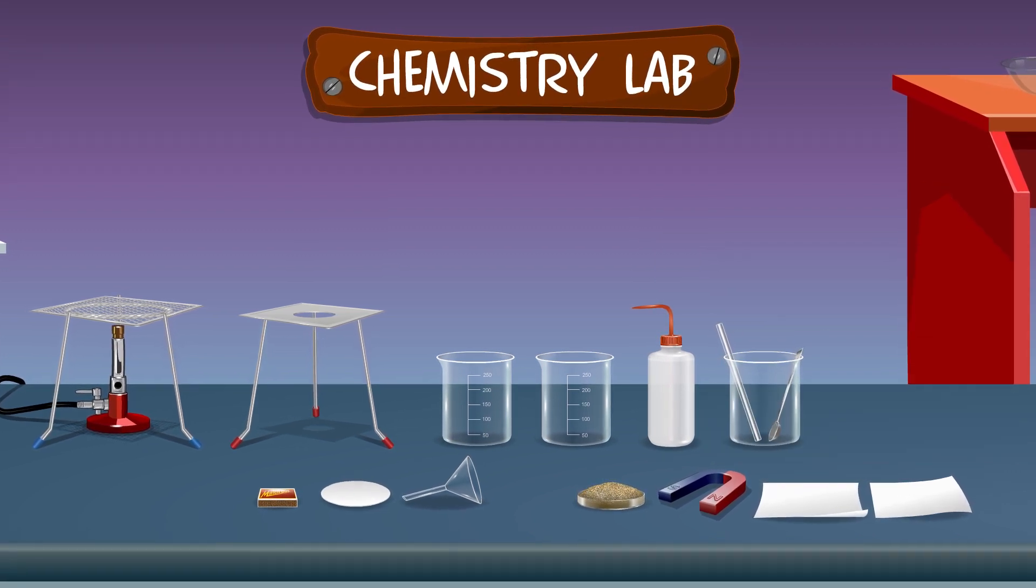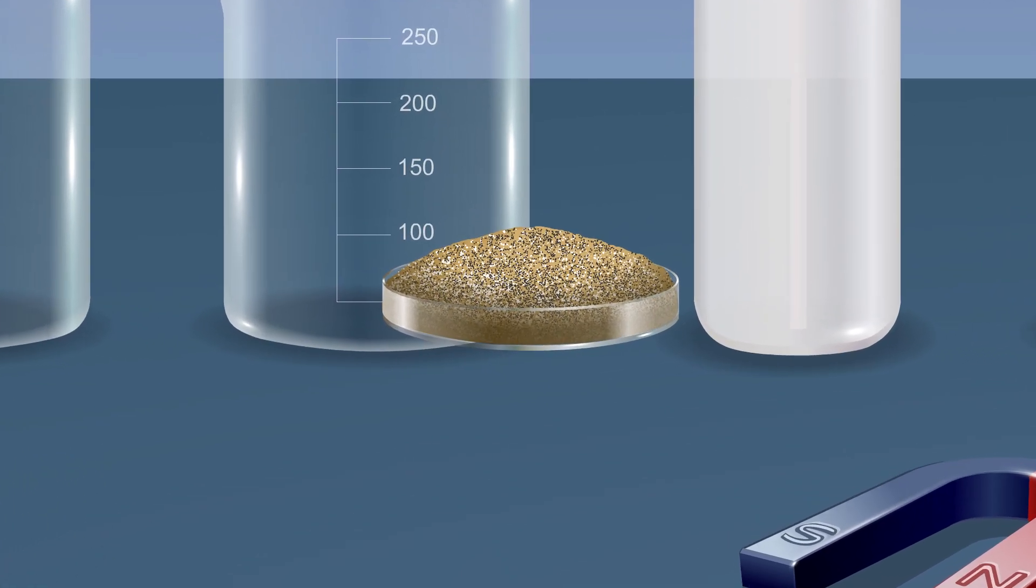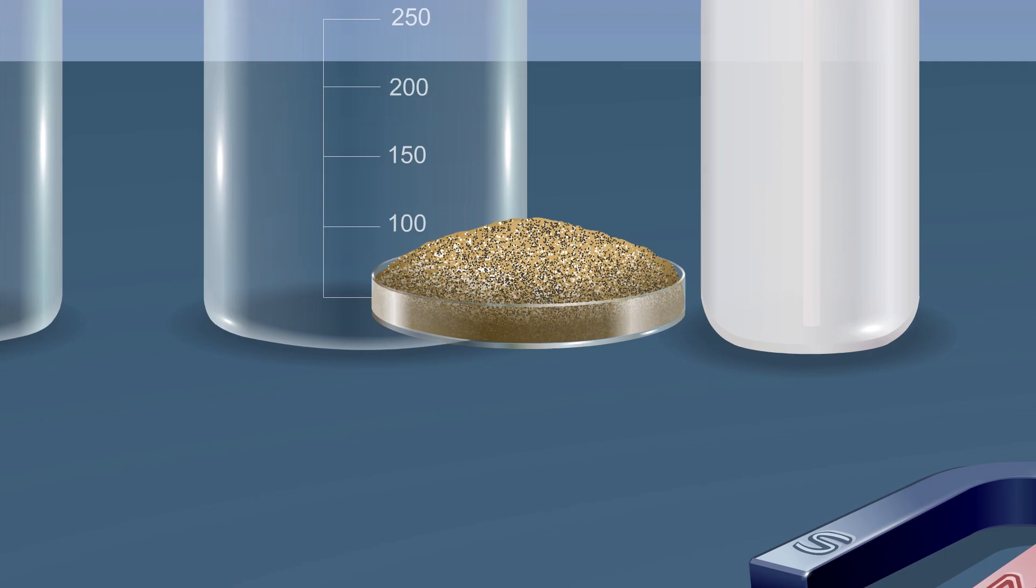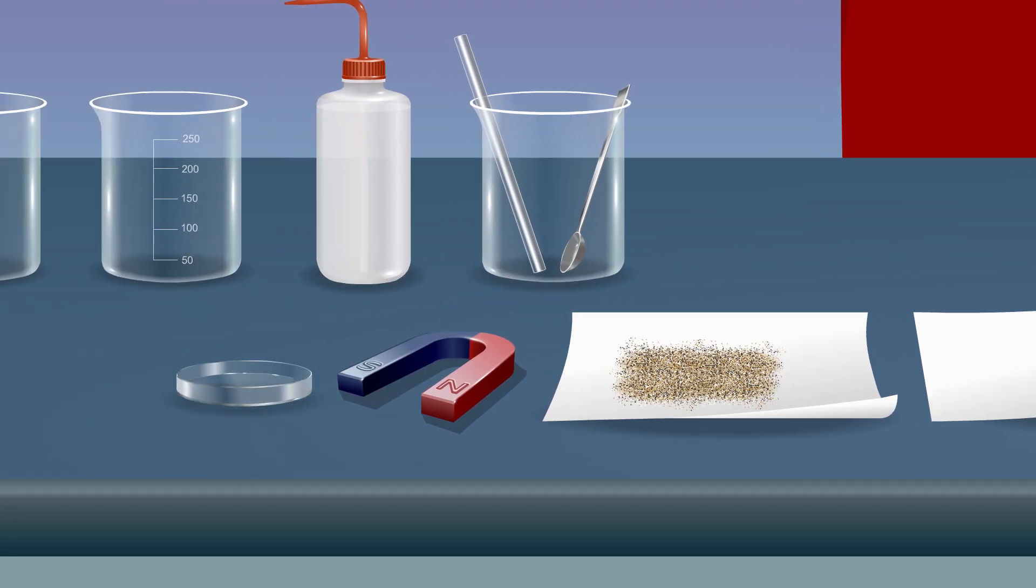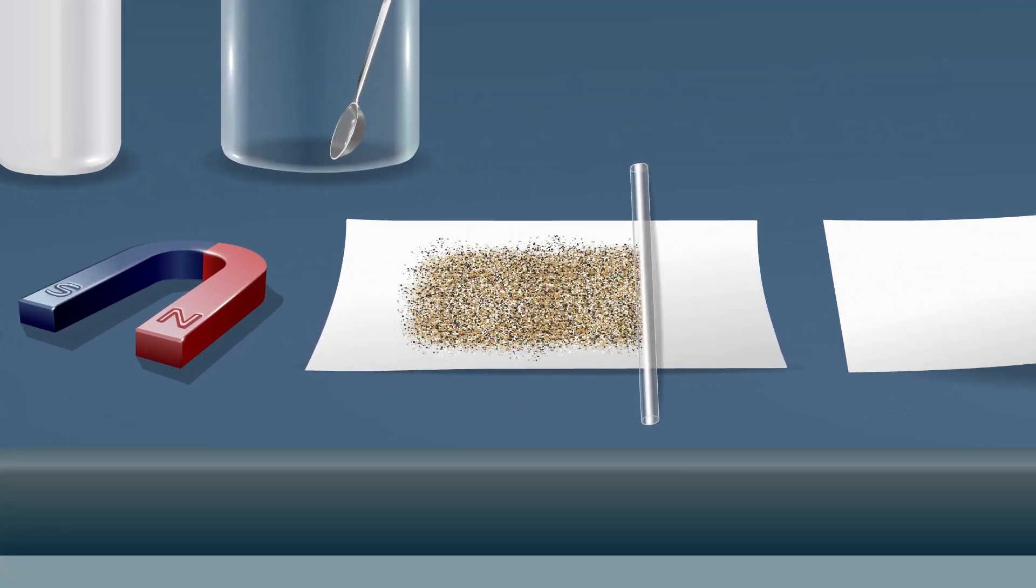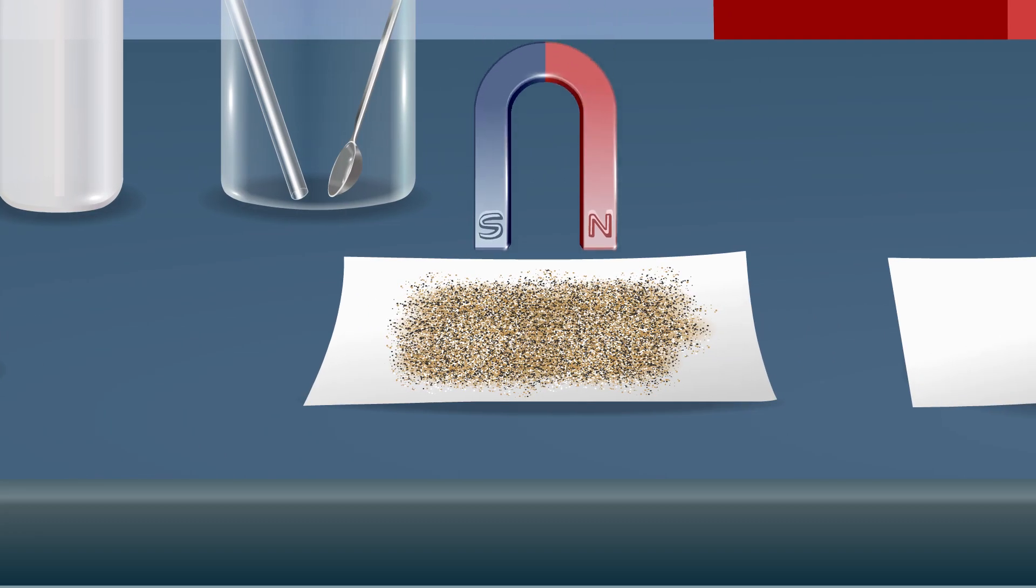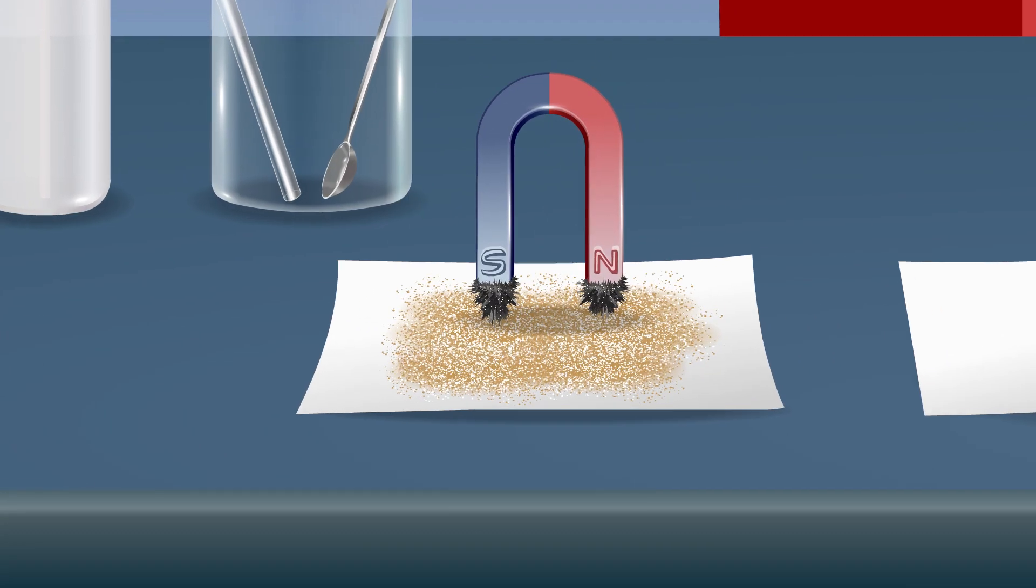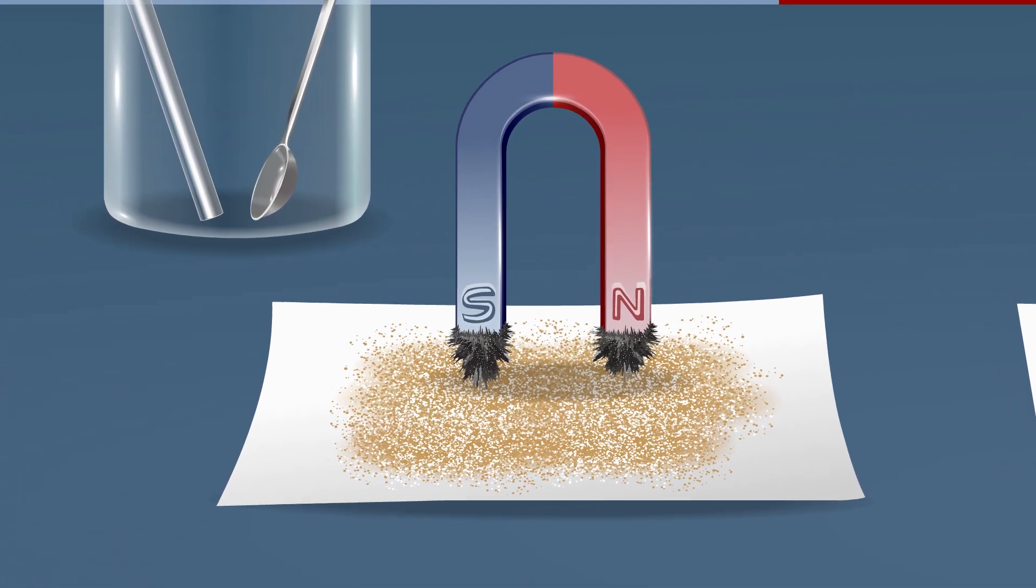Take a small amount of the given mixture of iron filings, sand, and common salt in a petri dish. Spread the mixture on a sheet of paper. Take a glass rod and spread the mixture. Move a magnet over the surface of the mixture. We observe that iron filings stick to the magnet and are thus separated.